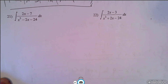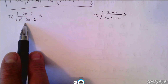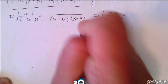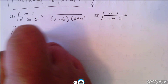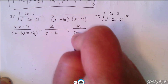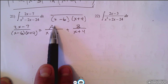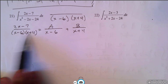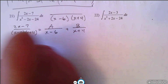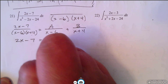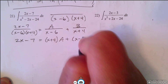Problems 21 and 22 — you're going to write with partial fractions. For problem 21, we're going to have to factor the bottom. It's going to factor into x minus 6 and x plus 4. So we're going to have 2x minus 7 over x minus 6 times x plus 4, which equals a over x minus 6 plus b over x plus 4. It's important to write this step out so we don't forget where a and b are going to go. Then multiply by the LCD, which is x minus 6 times x plus 4.